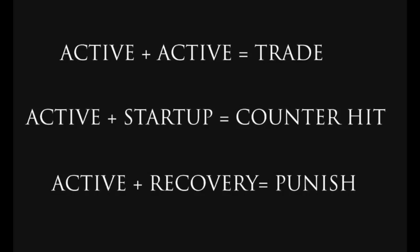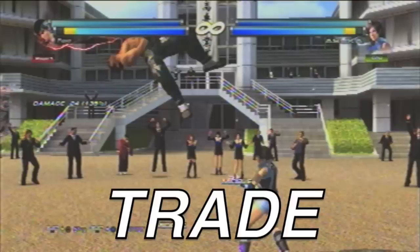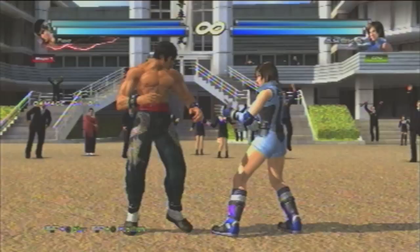A trade is when active frames meet active frames, meaning that two moves have the same startup frames, resulting in both players getting hit. You can think of it in terms of a race, where both players reach the finish line at the same time. In the case of Law's down forward 3 versus Asuka's forward 2, both moves require 17 frames to become active. After blocking Asuka's 2+3, which is plus 0 on block, if both players mash on their respective moves, they will both become active on the 17th frame, resulting in a trade.